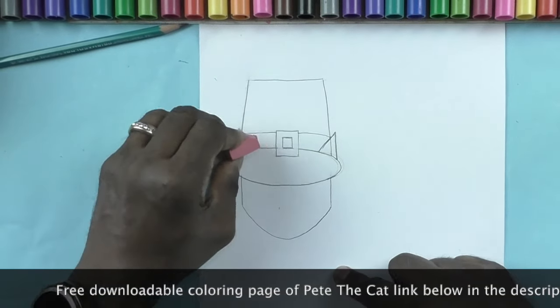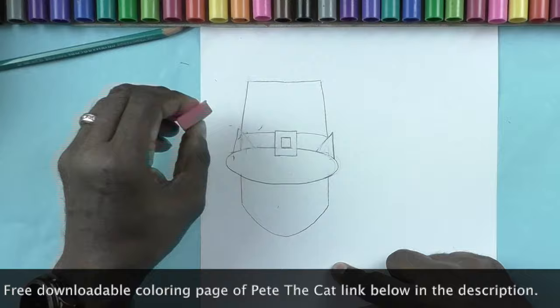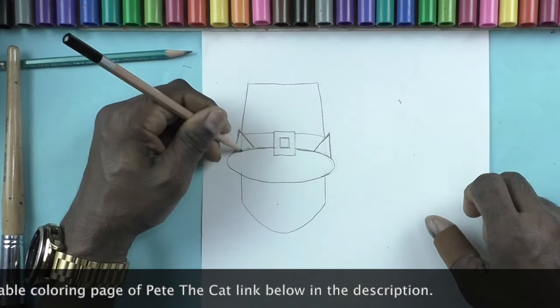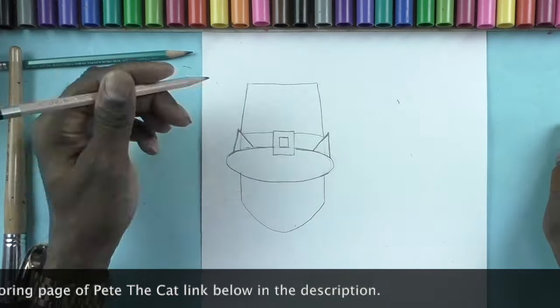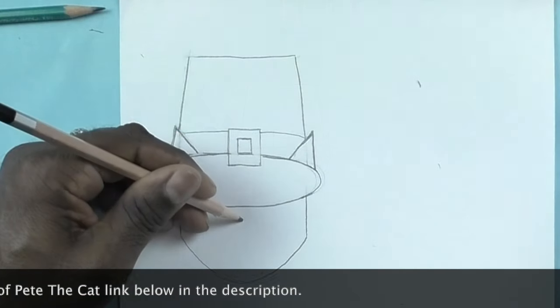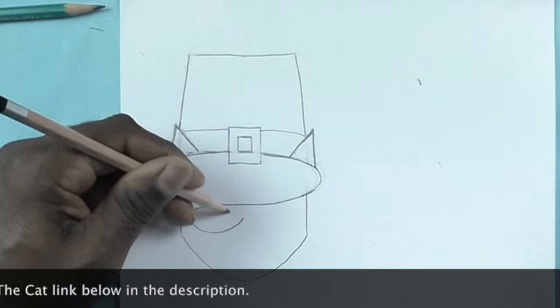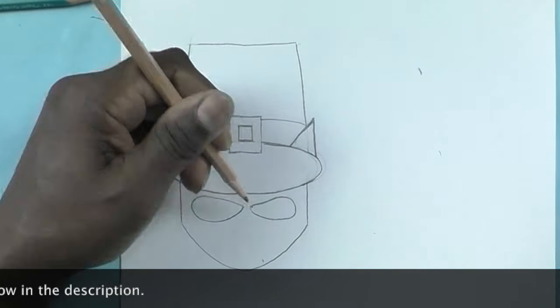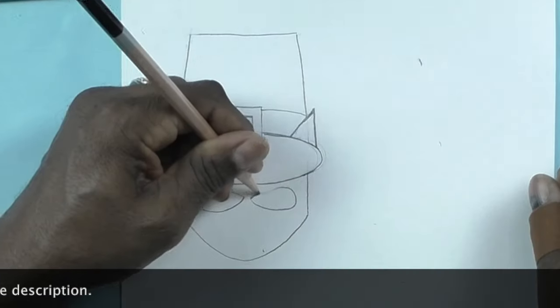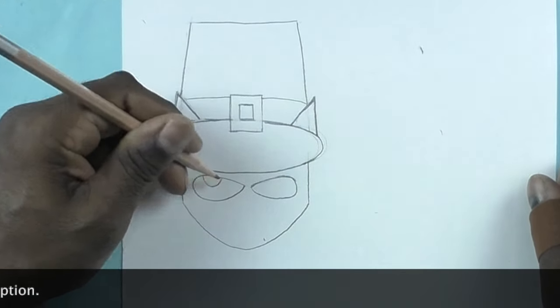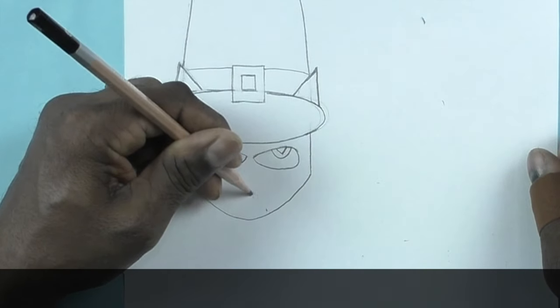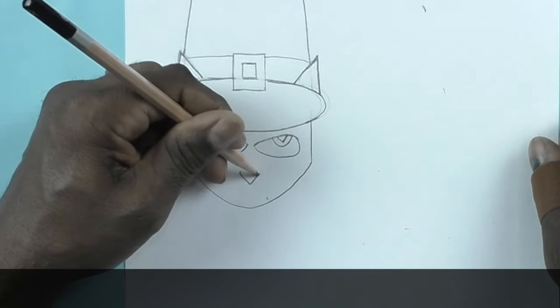And I just want to remind you I've included a free downloadable coloring page of my drawing of Pete the Cat. Please check in the description below, which you can only see on a laptop computer rather than a phone. I've made two teardrop shapes sideways and circles for his eyes. I'm working on his nose, it's kind of diamond shaped.